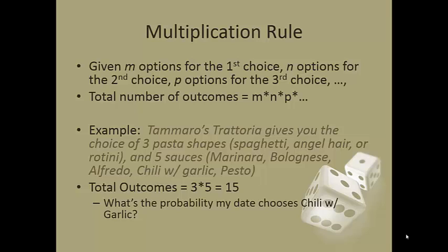Now I could go through and do an ordered list or a tree diagram and list spaghetti with marinara, spaghetti with bolognese, spaghetti with alfredo and so on, and I'd end up with 15 possible dishes that I could order. Or I could multiply my 3 pasta shapes times my 5 sauces.